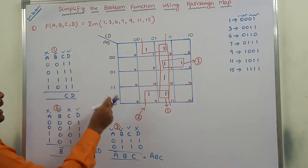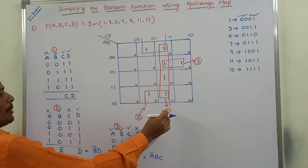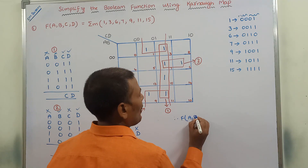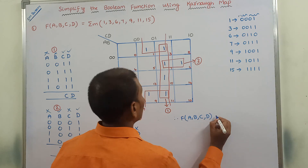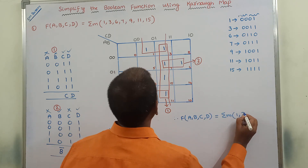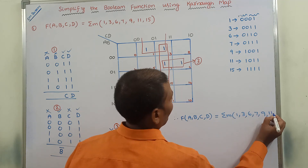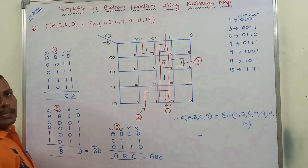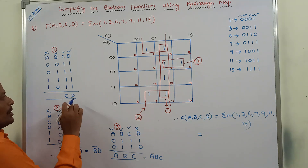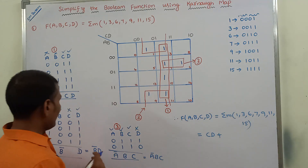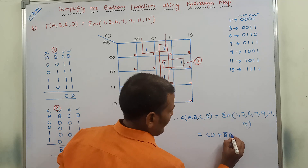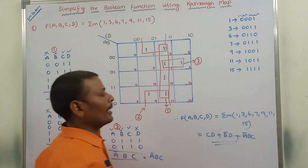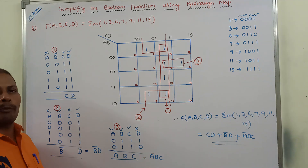So the simplified expression is: f(A, B, C, D) = Σm(1, 3, 6, 7, 9, 11, 15) = CD + B̄D + ĀBC. This is the simplified expression obtained using the four-variable Karnaugh map.